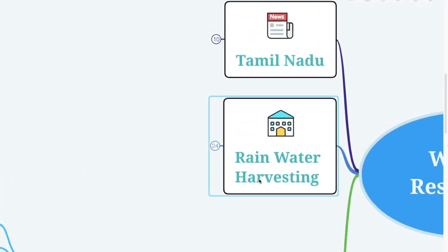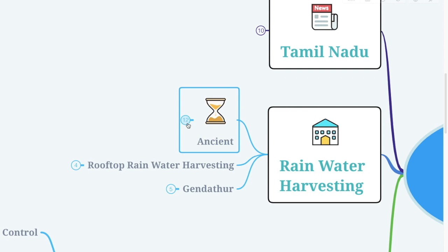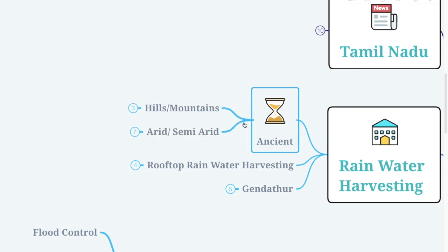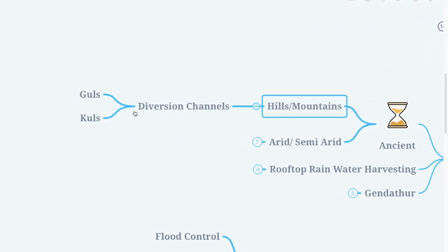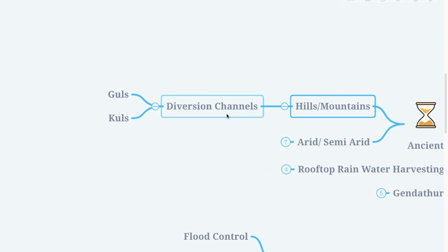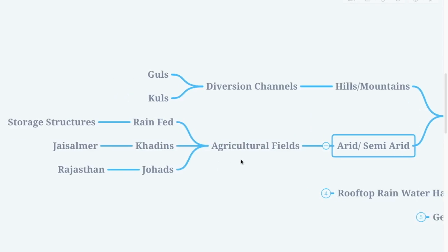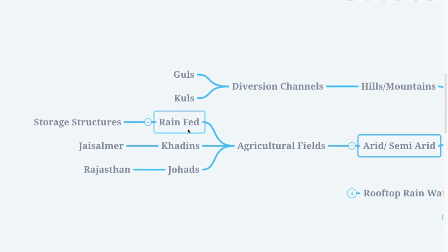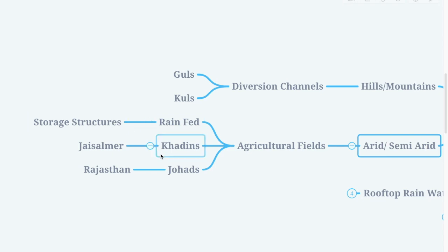Rainwater has been harvested for thousands of years. In ancient times, people on hills and mountains used divergent channels called guls and kuls. In arid and semi-arid regions, agricultural fields were rain-fed and used as storage facilities, known as khadins in Jaisalmer and johads in Rajasthan.